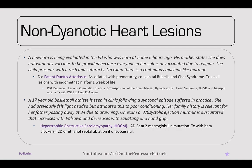A newborn born at home six hours ago has rash and cataracts, and on exam there's a continuous machine-like murmur — pathognomonic for a patent ductus arteriosus. It's associated with prematurity, congenital rubella syndrome, and CHARGE syndrome. Small lesions can be treated with indomethacin; they should close after about one week, especially in preemies. PDA-dependent lesions — those needing the PDA open — include coarctation of the aorta, D-type transposition of the great arteries, hypoplastic left heart syndrome, total anomalous pulmonary venous return, and tricuspid atresia. For these, keep the PDA open with prostaglandin E1.